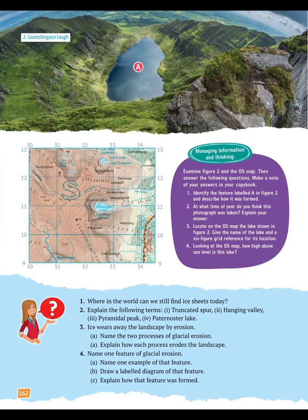Here's the work I'd like you to do. On page 162, look at figure two — the OS map — and answer the four questions in the purple circle. Question one: identify the feature labelled A in figure two. A glacier melted and left a lake behind in a corrie — there's a word for that beginning with the letter T. Identify it and describe how it was formed. Question two: at what time of year do you think the photograph was taken? Please explain your answer. Question three: locate the lake shown in figure two on the OS map, give the name of the lake, and provide a six-figure grid reference for its location. Question four: looking at the OS map, how high above sea level is this lake? Look for a spot height or a height written on the highest contour line.